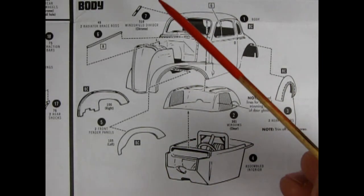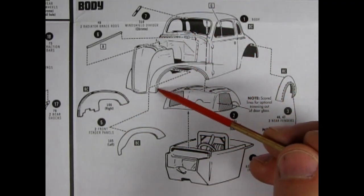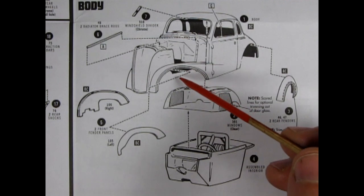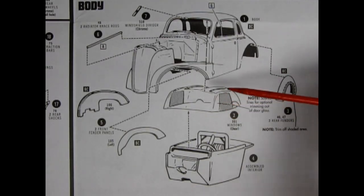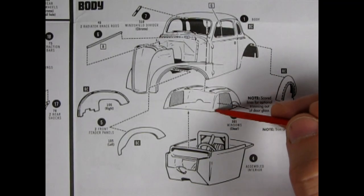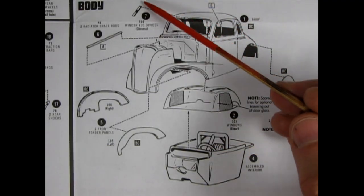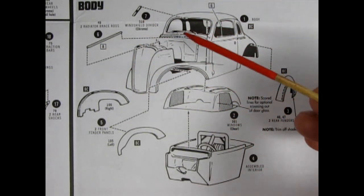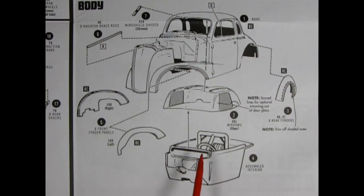Next, we have the body construction assembly. And of course, here's our one piece body. Now, it shows these two front fender panels going into place, and they would glue on the inside of the fender arch. And we also have our rear fenders being glued on here. And it does say to trim this back, so you can get those big tires in. And our windshield is molded as one bubble, but it says note, scored lines for optional trimming out of door glass. So you can actually cut it out back here and remove that. So it's just the window in the back and the little no draft window. Then we have our assembled interior going up into place. And we've got a windshield divider in here as well as two radiator brace rods. And they would go on either side of the radiator and come up into here and here. And now we can look at the other instructions and see how they assemble the body.